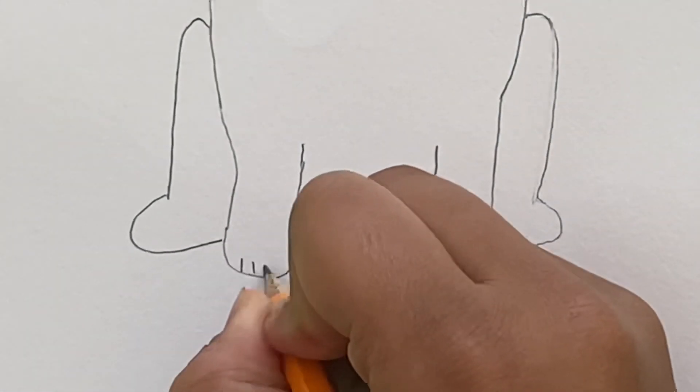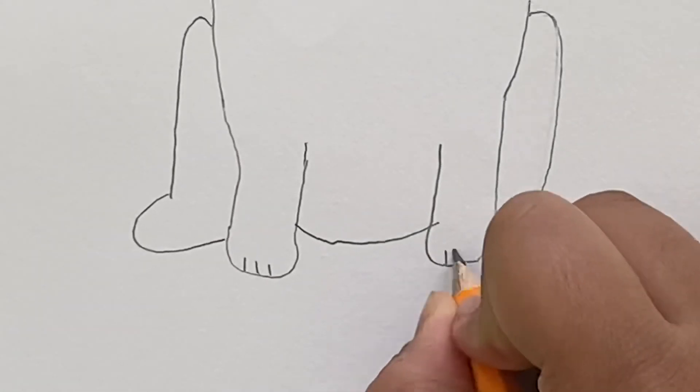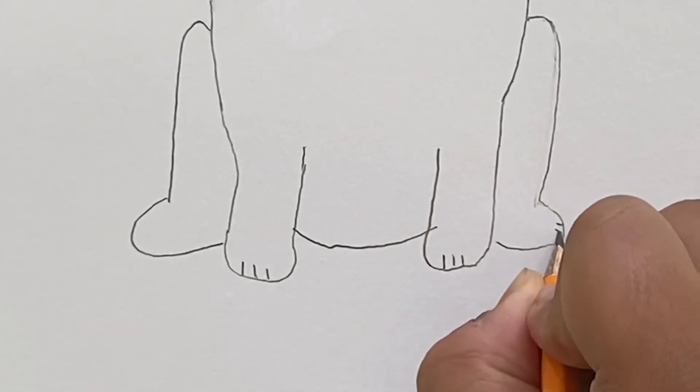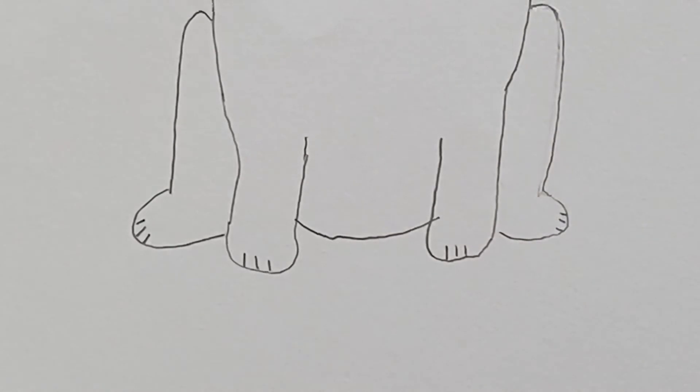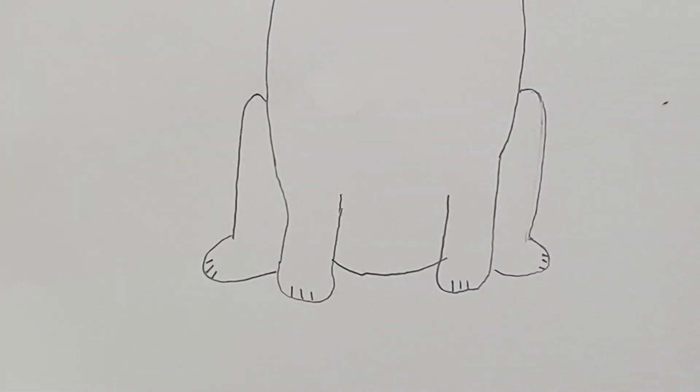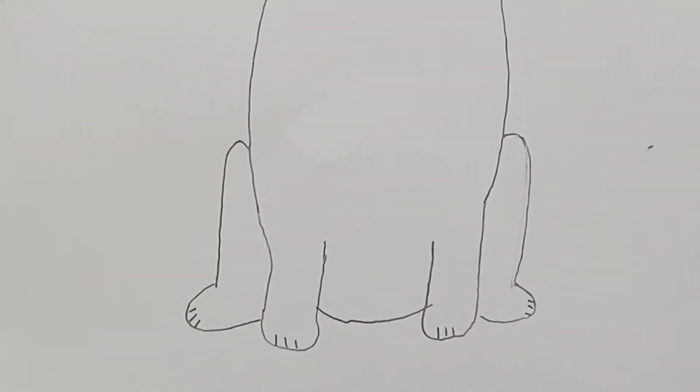Now we're going to add little lines inside of all the paws. I'm just going to add three in each one of them. There. Now, I'm done with that.